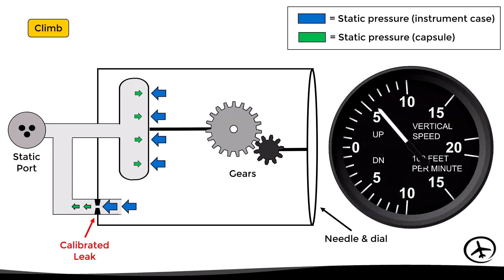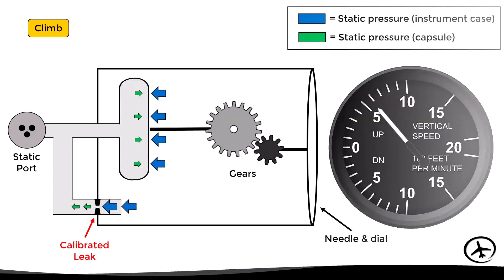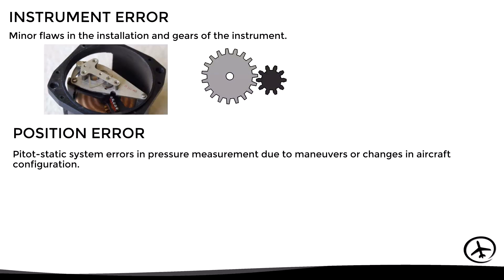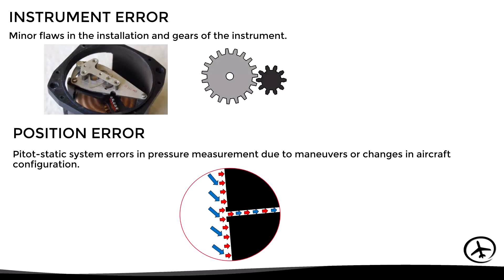This instrument is imperfect. Just like the altimeter, the VSI suffers from instrument error, which is caused by mechanical imperfections and wear of the gears. It also experiences position errors due to inaccuracies of the pitot-static system while measuring the static pressure, caused by maneuvers and changes in aircraft configuration.